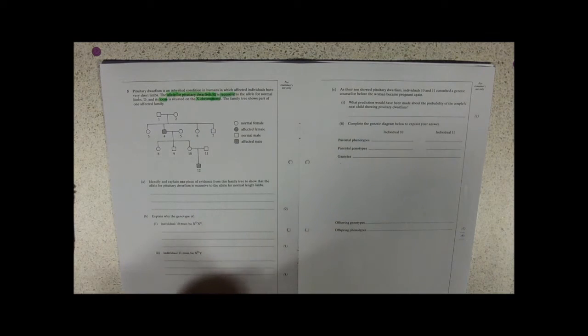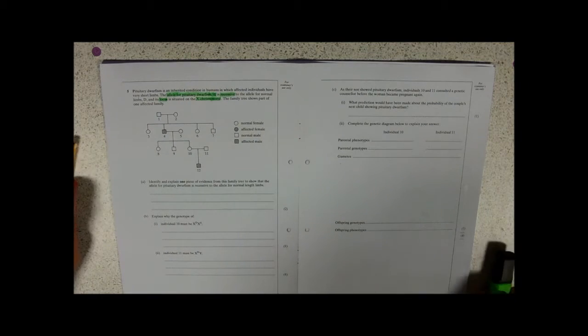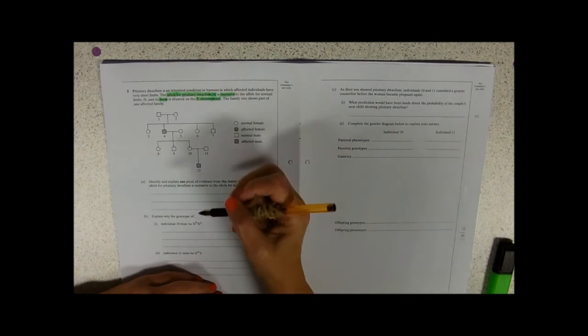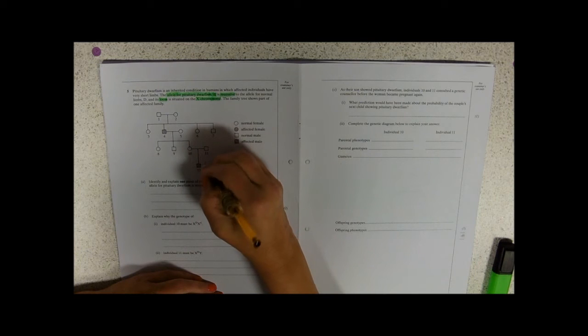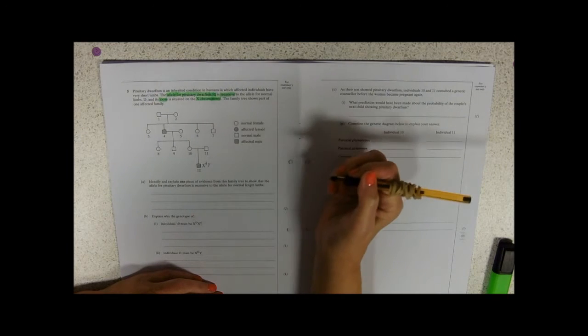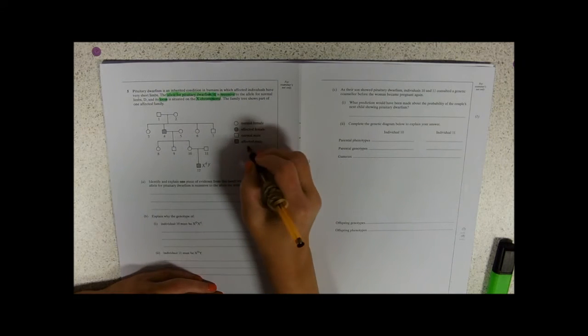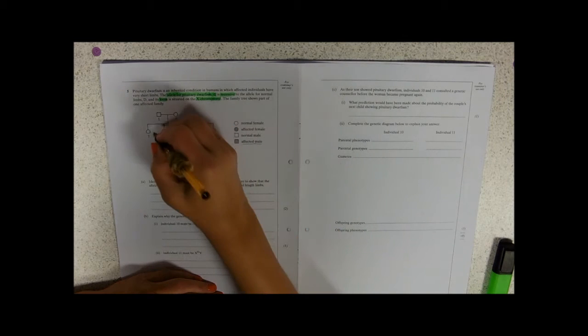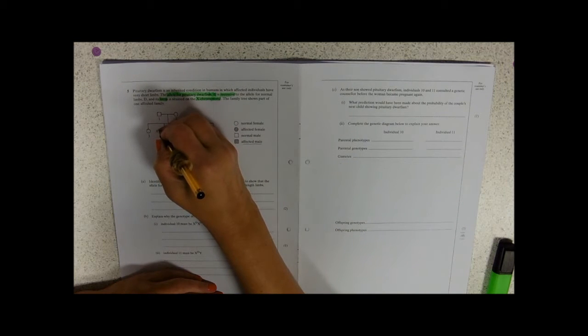Now, when you're dealing with sex linkage, it's always quite a good idea to identify your affected individuals. So here's number 12, and he's got to be X little d, and he's a boy, so he's got to be Y, affected male here. And this one has also got to be X little d Y.